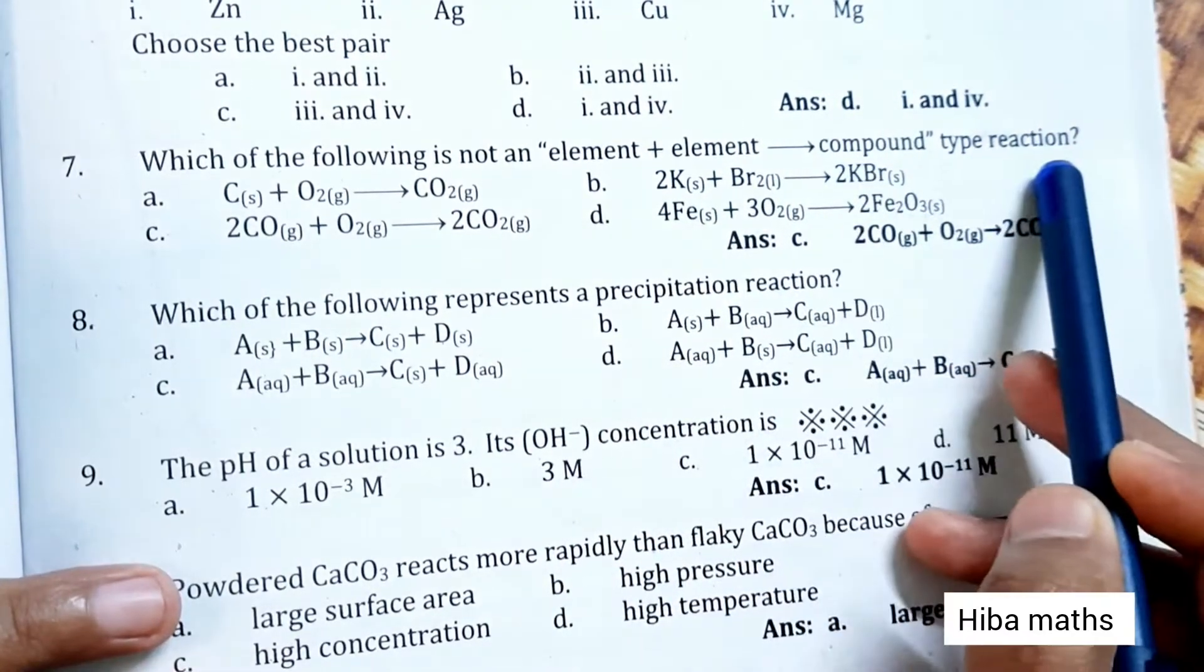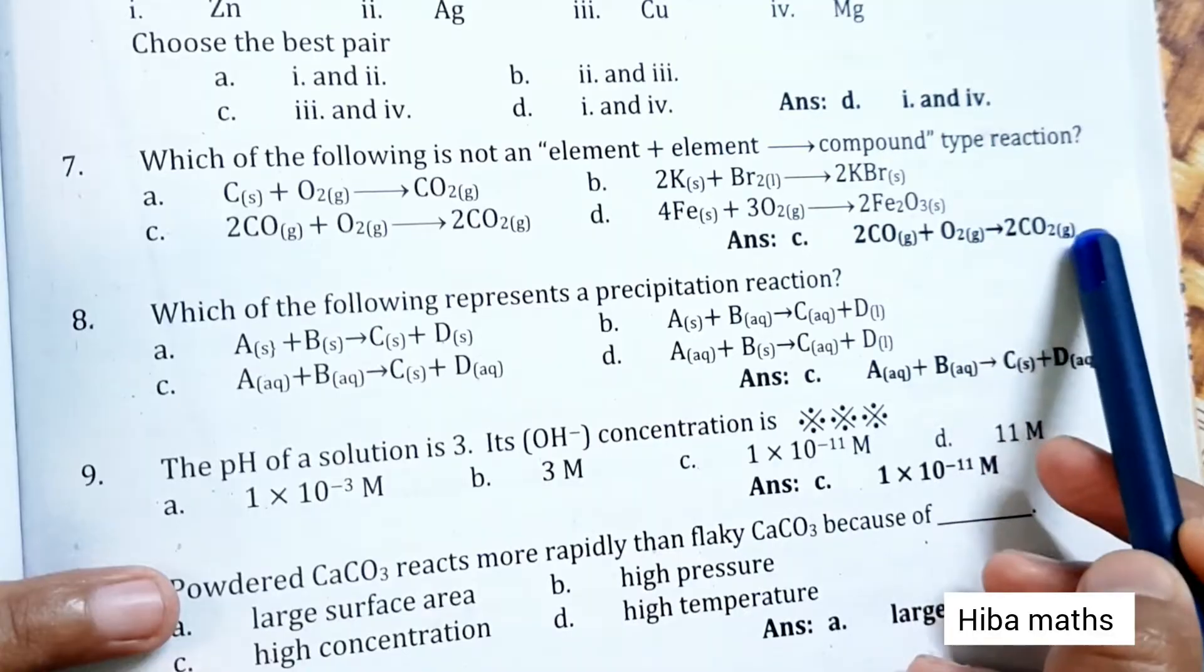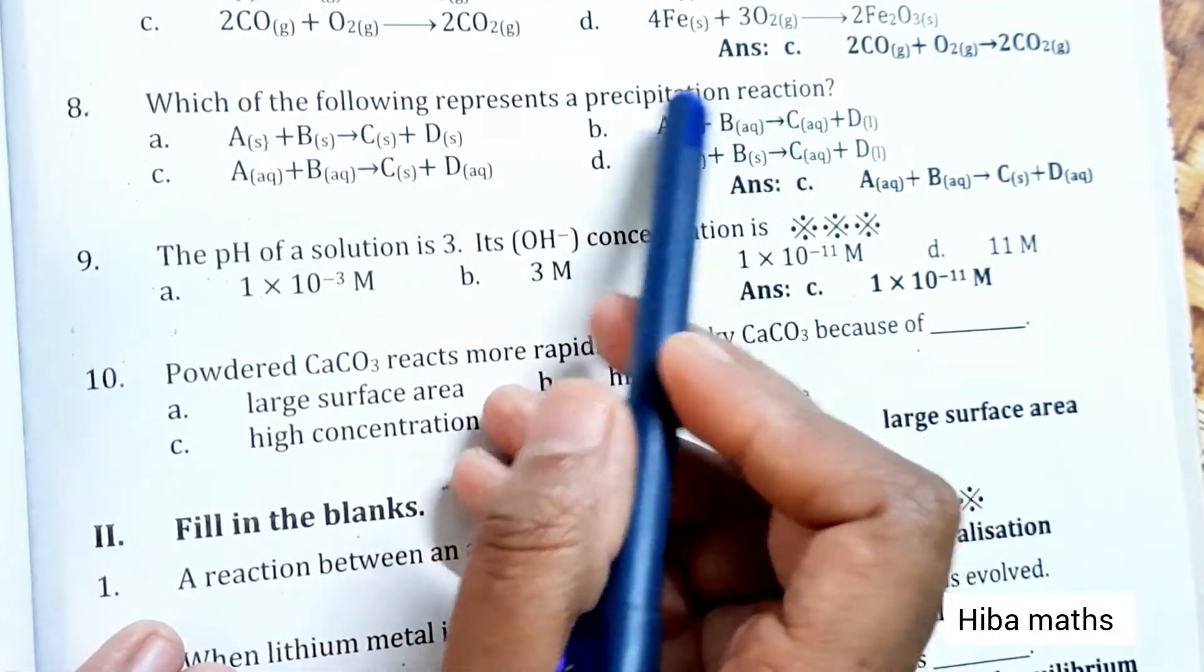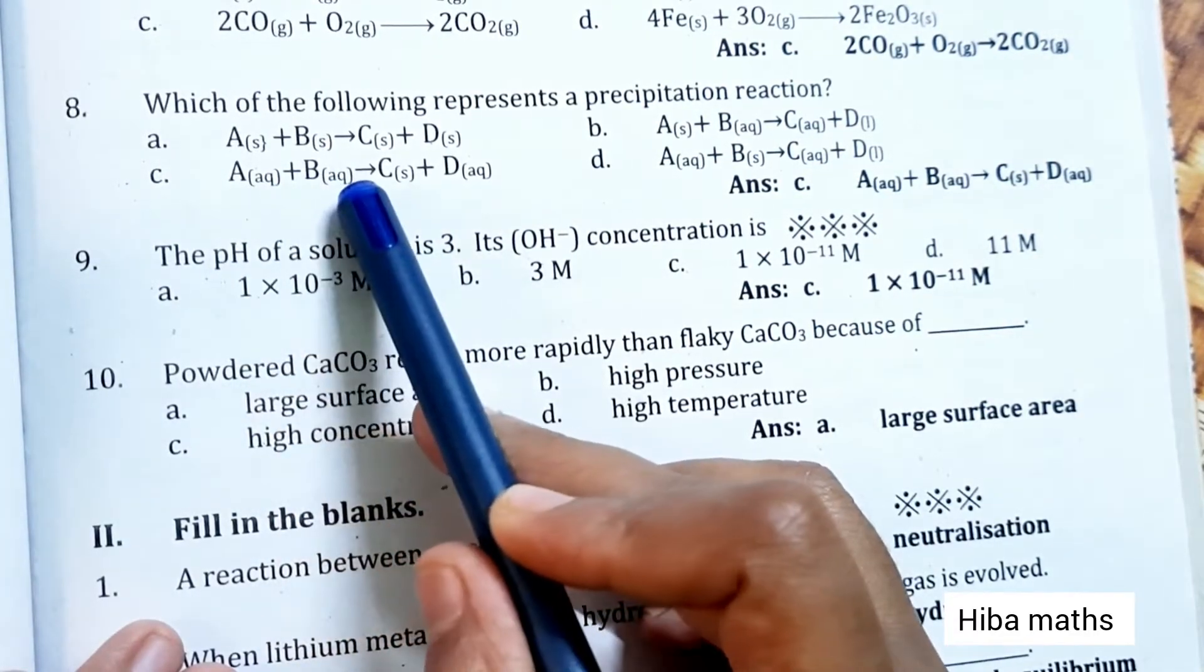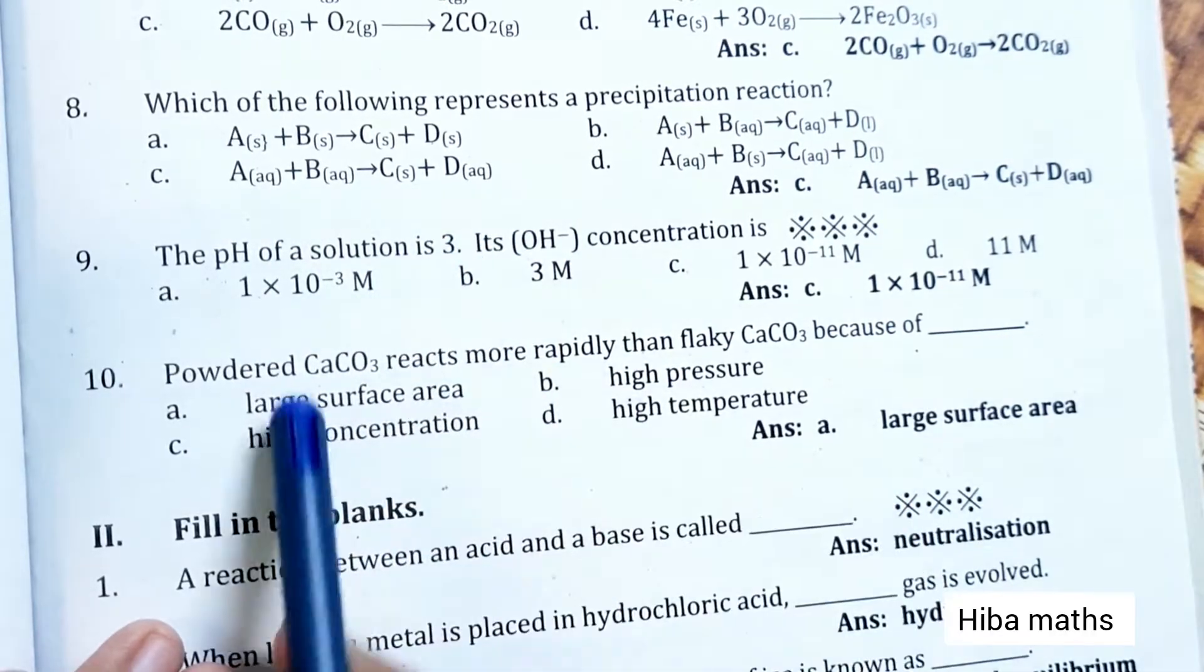2CO plus O2 gives you 2CO2. Each of the following represents a precipitation reaction. Answer is C: A plus B gives C plus D where aqueous or solid occur.